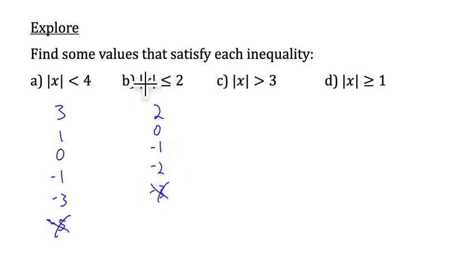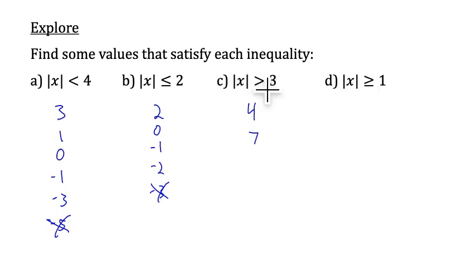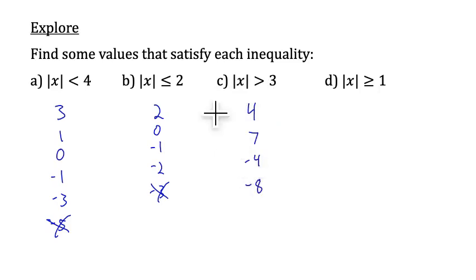Same thing with positive 3 and positive 4 — those don't work either. Now we're switching the inequality direction. We want the absolute value of x to be greater than 3. The number 3 doesn't work because 3 is not greater than 3, but 4 would work, and 7 — numbers where the absolute value is greater than 3. Numbers like 0 or 1 would not work. But negative 4 works because the absolute value of negative 4 is positive 4, which is greater than 3. Or negative 8 — that would certainly work because positive 8 is greater than 3.